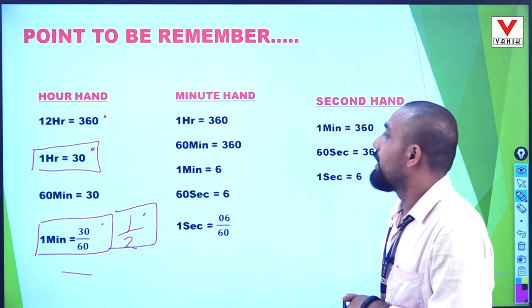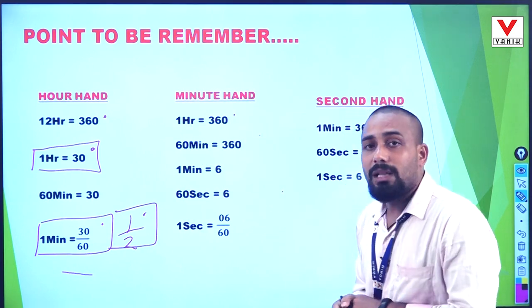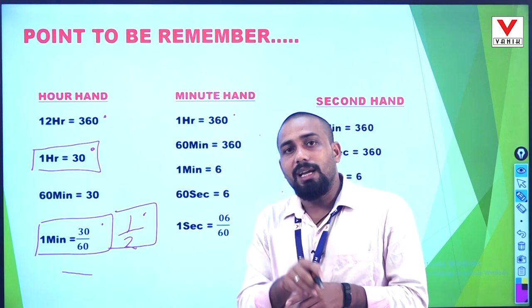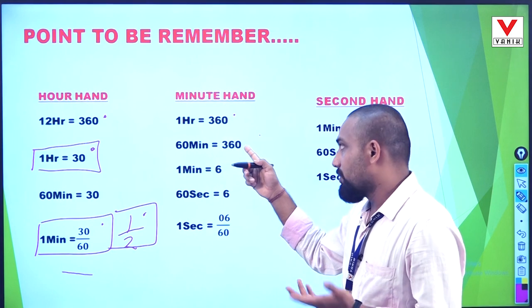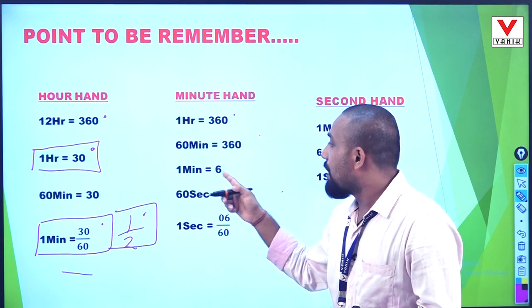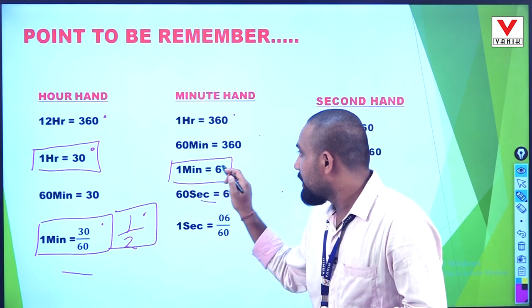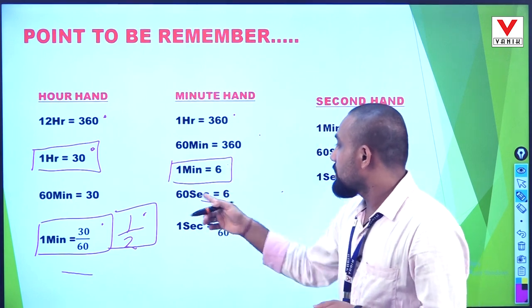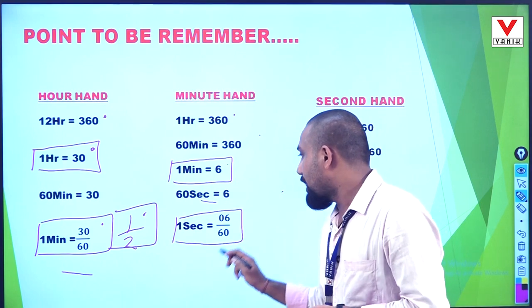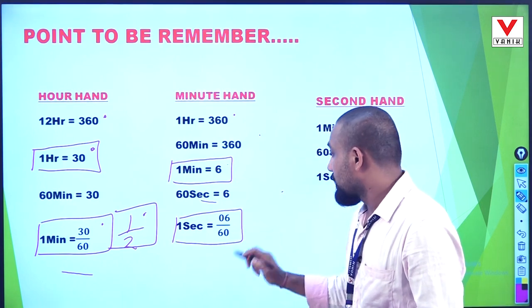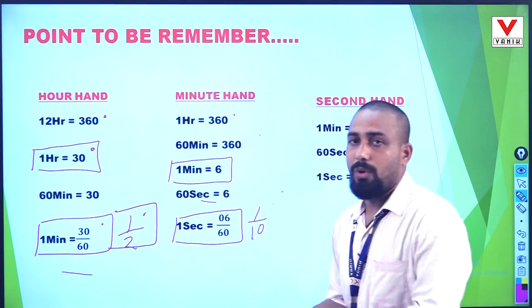Now, the minute hand. The minute hand covers the whole clock in 1 hour, meaning 1 hour equals 360 degrees. So 60 minutes equals 360 degrees, which means in 1 minute it goes 6 degrees — this is an important point. And in 1 second, the minute hand covers 6 divided by 60, which equals 1 by 10 degrees.